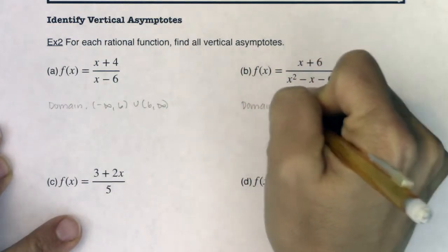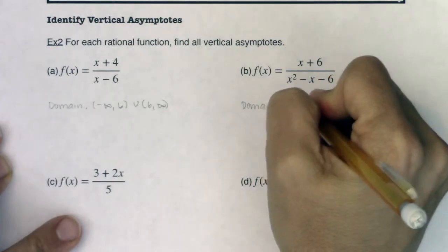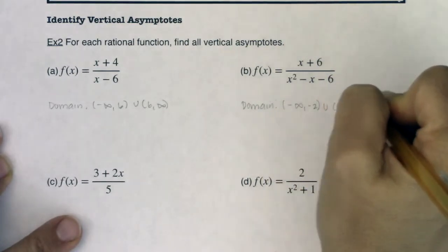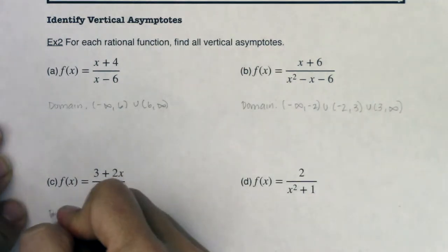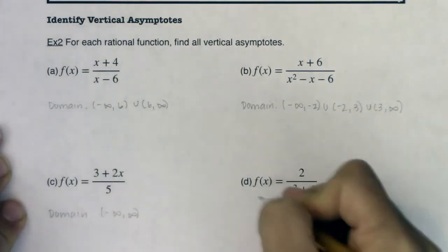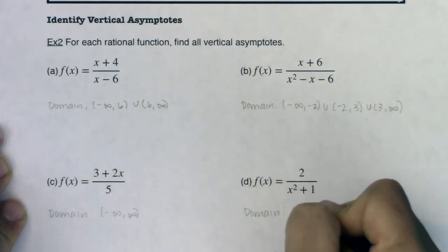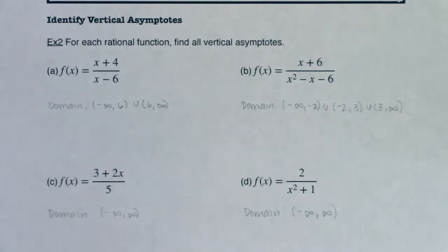Our domain on this function, and these again, same functions as example one, I believe we gave the boot to negative two first, and then we went to three. All right, and the domain here was all real numbers, and the domain on this one was also all real numbers, because for c and d, our fractions never zeroed out.